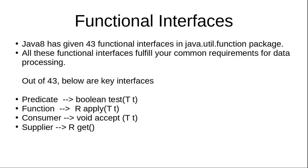Supplier is a functional interface with a single abstract method called get(). It doesn't accept any input but returns a value of type R. These are the four main pillars of functional interfaces.